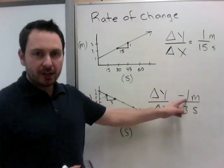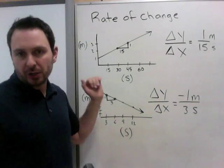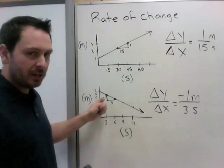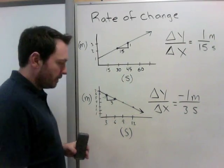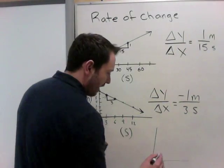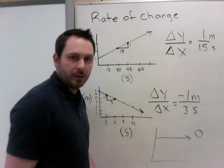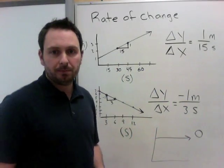So our rate of change is negative 1 meters over 3 seconds. So a negative rate of change means something's dropping. It could be your speed's dropping, your height's dropping, something is going down. And here we're going down 1 meter every 3 seconds. And I guess the last one we might need to see is if we had another graph that just went straight. The rate of change would be 0, because it is not going up or down.